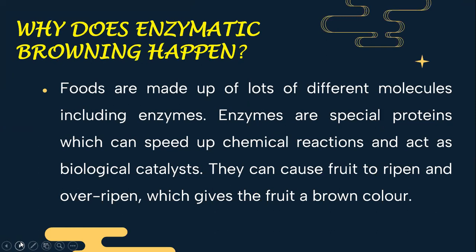Why does enzymatic browning happen? Foods are made up of lots of different molecules including enzymes. Enzymes are special proteins which can speed up chemical reactions and act as biological catalysts. They can cause fruit to ripen and over-ripen, which gives the fruit a brown color.